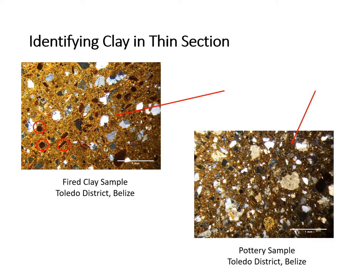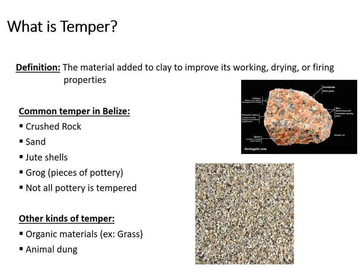Not all clays are ideal for making pots in their natural state, so potters will add materials — what archaeologists call temper — to the clay to improve its quality. The added materials serve a variety of purposes to make the clay more workable and suitable for pottery production. The most common tempers used in Belize are crushed rock and sand, but potters also use grog and flute shells. Potters in other regions will also use organic material like grasses and animal dung as temper. Most, but not all, of the ancient Maya pottery produced in Belize uses an added temper. Potters may have added temper to increase the strength of the clay, to decrease the stickiness, or to reduce shrinkage in the drying process.